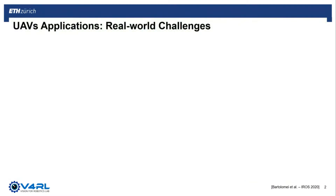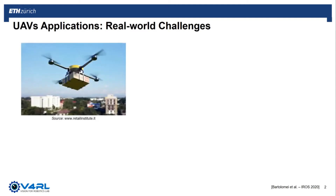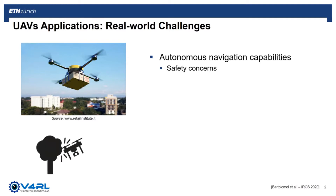In recent years, unmanned aerial vehicles or UAVs are becoming more and more popular. Thanks to their agility, they can be used in a number of real-world applications such as delivery of goods or medical equipment. The robotic research community has spent huge efforts to increase the autonomy of these platforms with respect to their navigation capabilities. However, safety still remains a big challenge, as during navigation the integrity of both the platform and the surroundings has to be maintained.